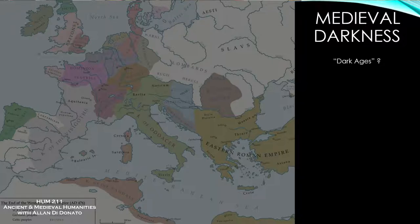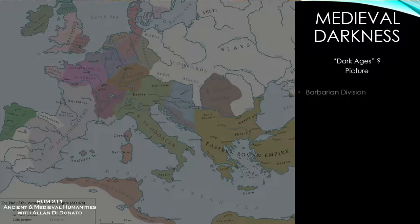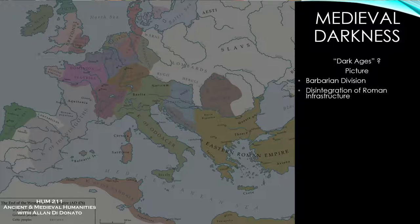So let's take up the question of the Dark Ages — I'm putting a question mark next to that because we need to discuss it. Was this period after the fall of Western Rome actually a dark age? The picture we tend to get of the thousand years following Rome's collapse is one of barbarian tribes dividing the empire, mass migrations, and the ultimate collapse of the Roman government, leading to disintegration of imperial infrastructure. Schools closed, roads and aqueducts fell into disrepair.